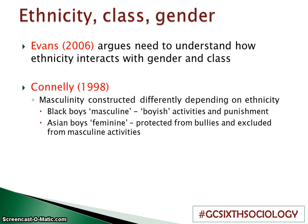Finally, there is a link between ethnicity, class, and gender. Evans argues we need to understand that it's not just ethnicity but also gender and class within ethnicities. Connolly believes that masculinity is constructed very differently depending on ethnicity, which leads to boys reacting differently to how teachers treat them. Black boys are seen as very masculine and boyish — given boyish activities, encouraged to do sport, and also punished. Asian boys, by contrast, are seen as more feminine and understanding — they are protected from bullies, excluded from masculine activities, and not punished in the same way.